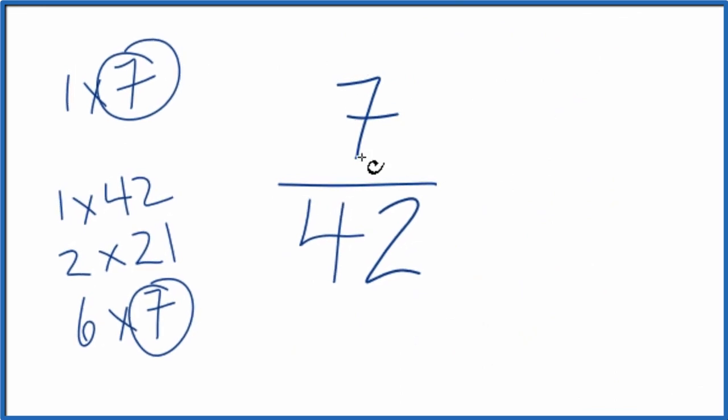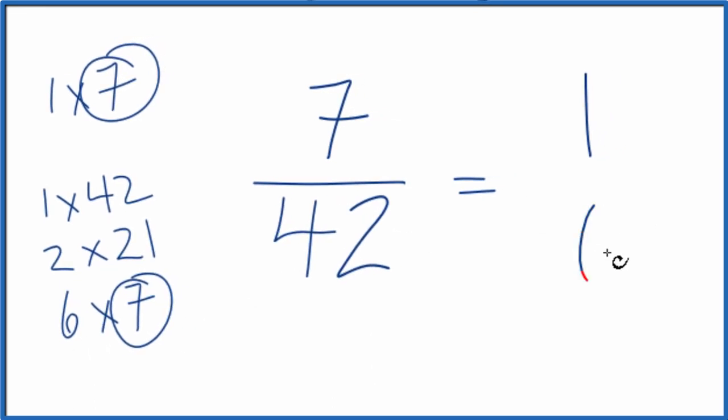So 7 divided by 7, that gives us 1. And 42 divided by 7, that gives us 6. And we've simplified the fraction 7/42 down to 1/6.